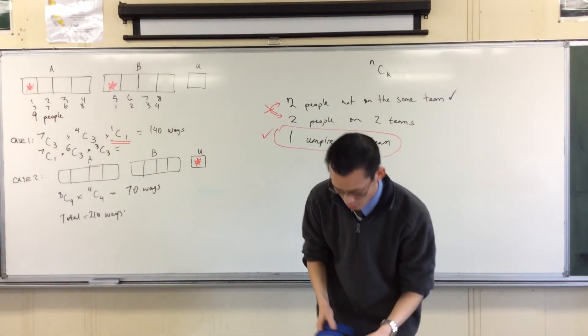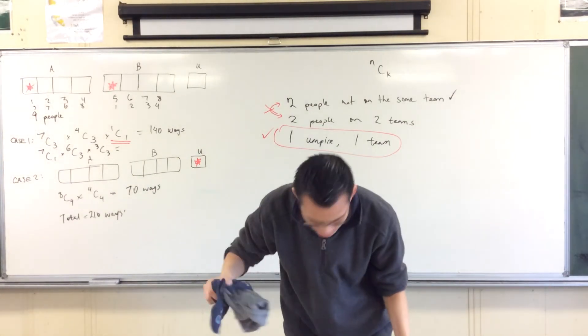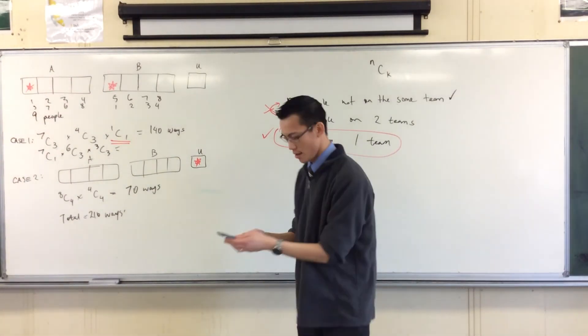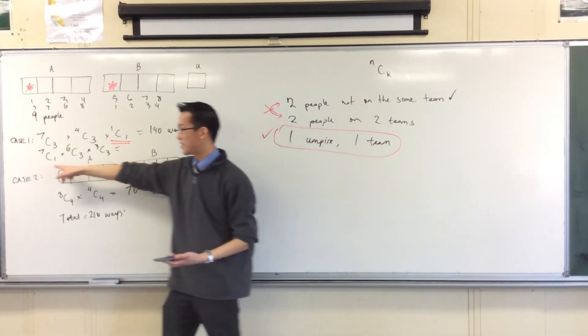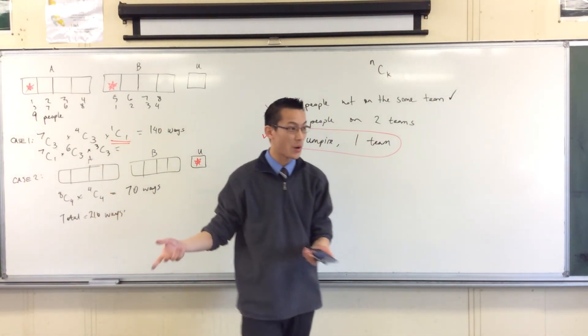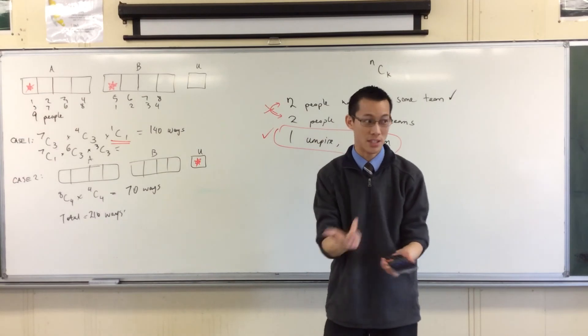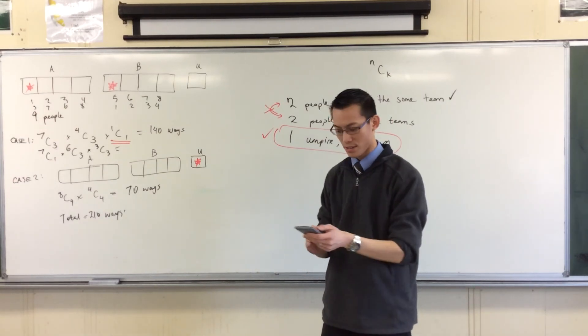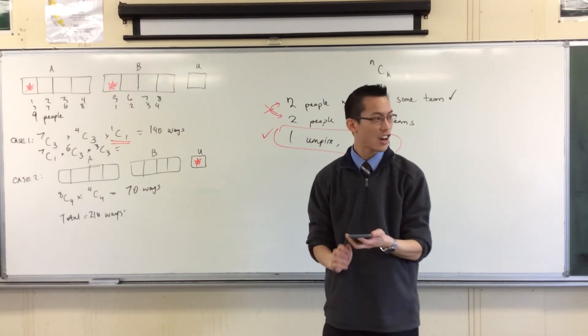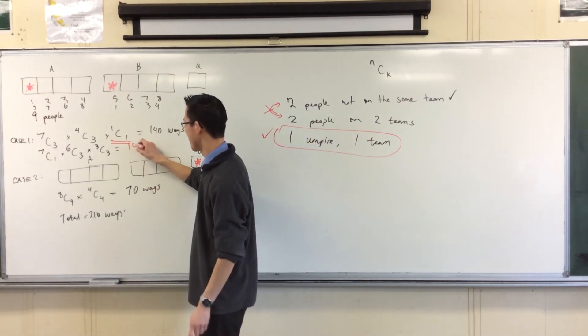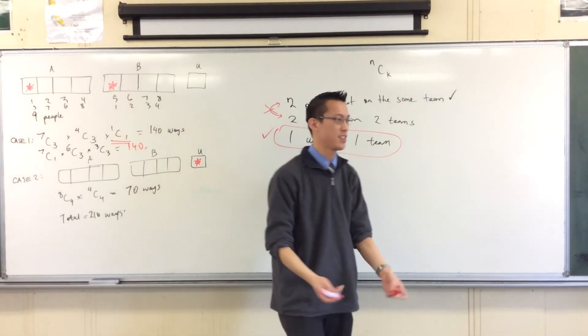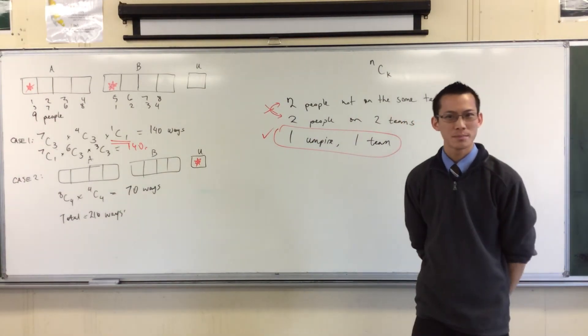And then you get your calculator and you say, well, what is... You can probably anticipate what seven choose one is going to be. It's just seven. So then you go, well, what's six choose three? And you're like, oh, it's 20. It's still 140 ways. It's the same situation. You just looked at it from a different angle.